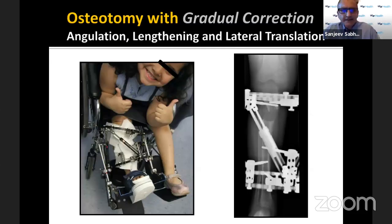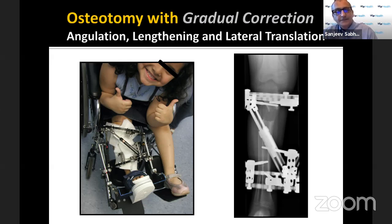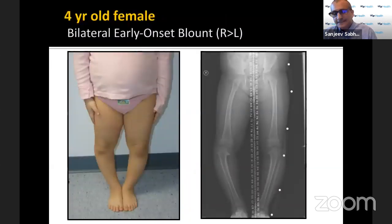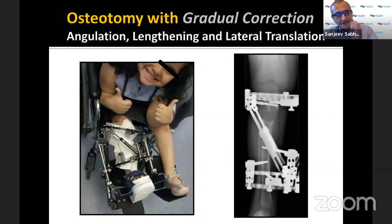Gradual correction is a much stronger tool and has become more common in the last decade. Not only does it allow you to safely address all components of the deformity including length, but you can dial things in as opposed to an acute correction. You also have to appropriately laterally translate the distal fragment of the tibia in children with Blount's so as not to create an iatrogenic deformity.